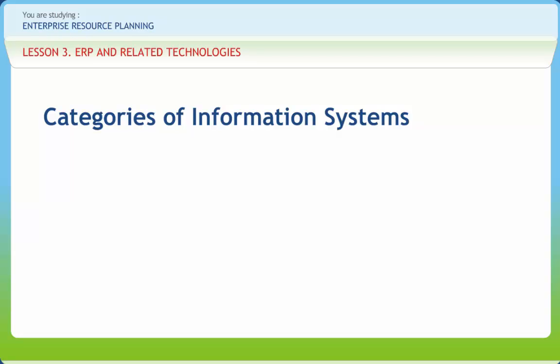There are various categories of information system. Transaction processing systems (TPS) are designed to process routine transactions efficiently and accurately. Transaction processing systems are process oriented. There are two ways in which TPS process data: real-time processing and batch processing. Real-time processing is also known as online transaction processing. In batch processing, the information gathered is stored but is not processed instantly.